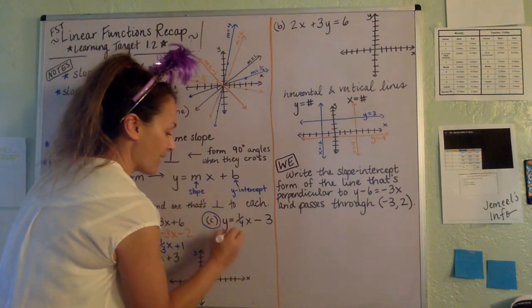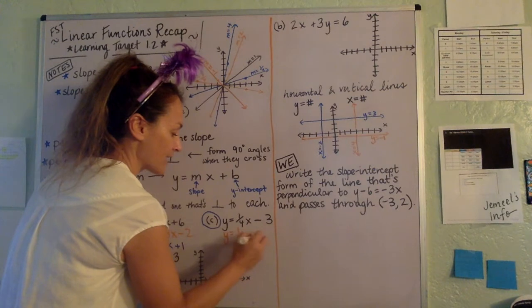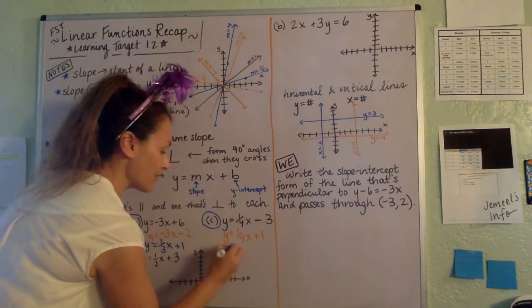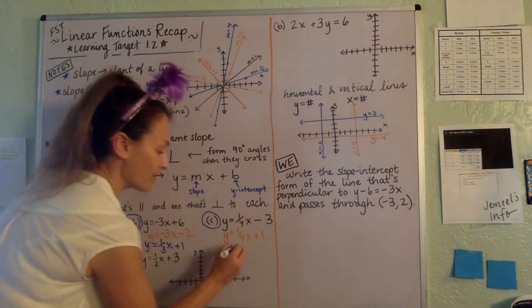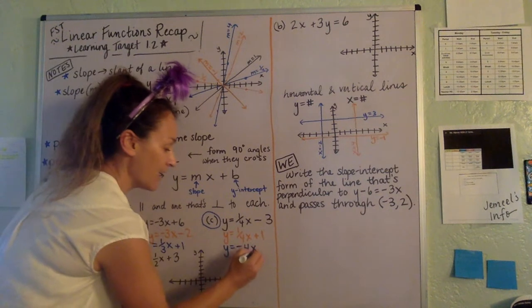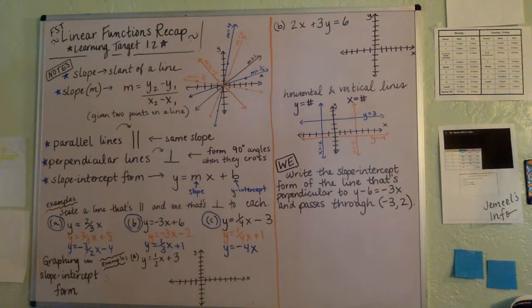Parallel, Y equals 1-fourth X plus 1. And perpendicular, an example of a perpendicular line to this given one would be negative 4 over 1 or negative 4X plus or minus whatever.